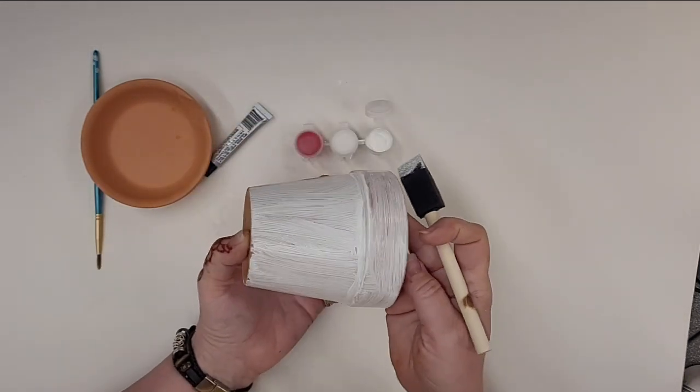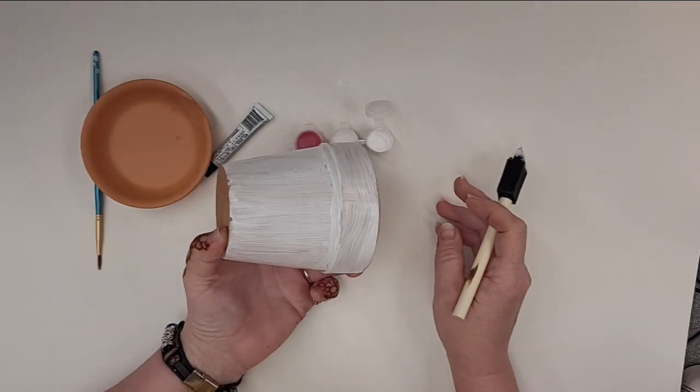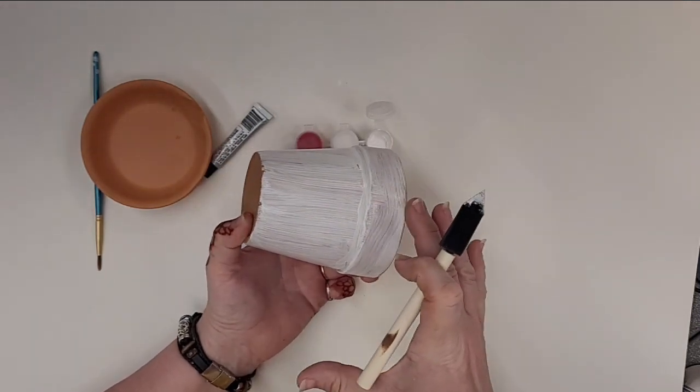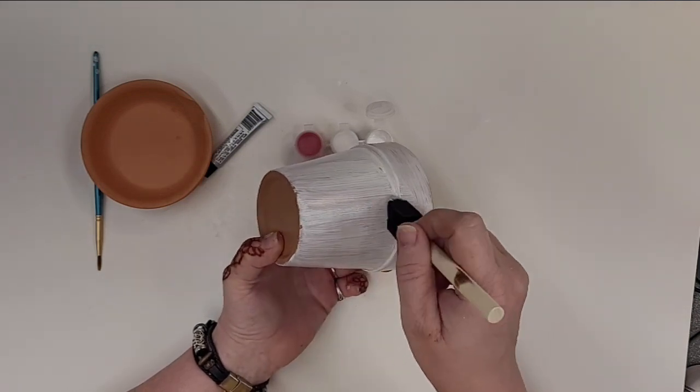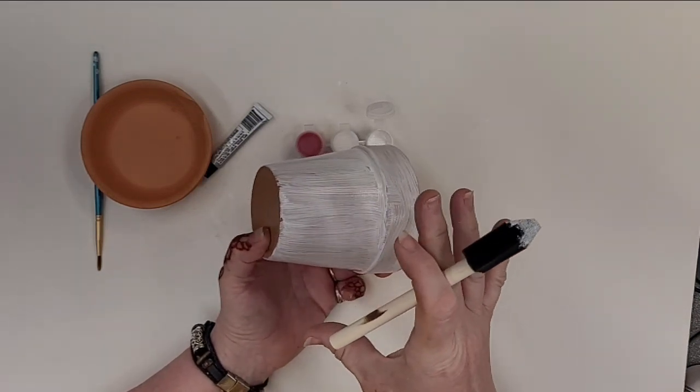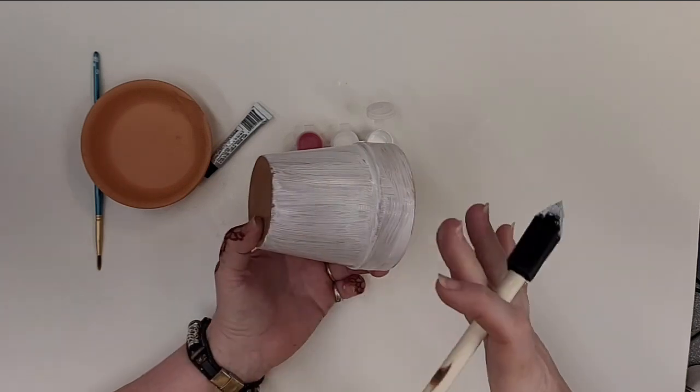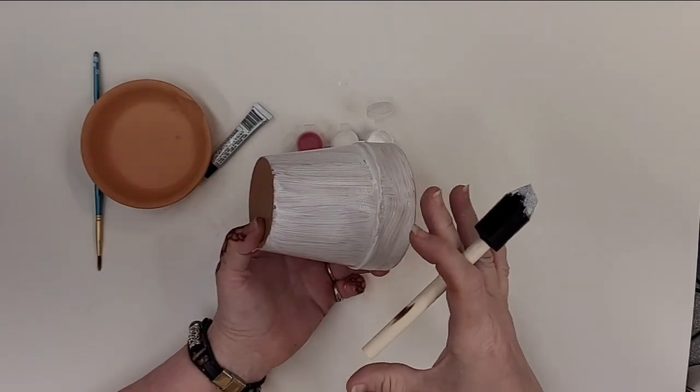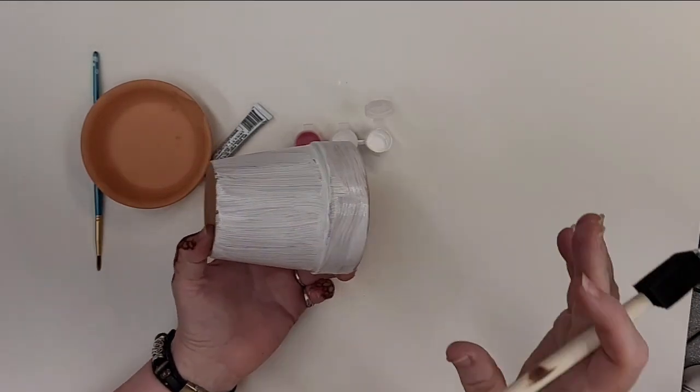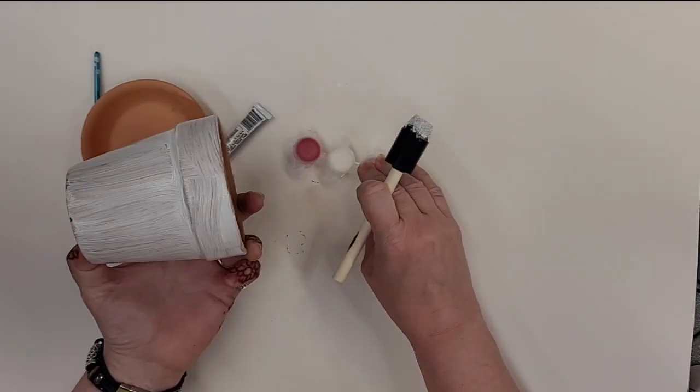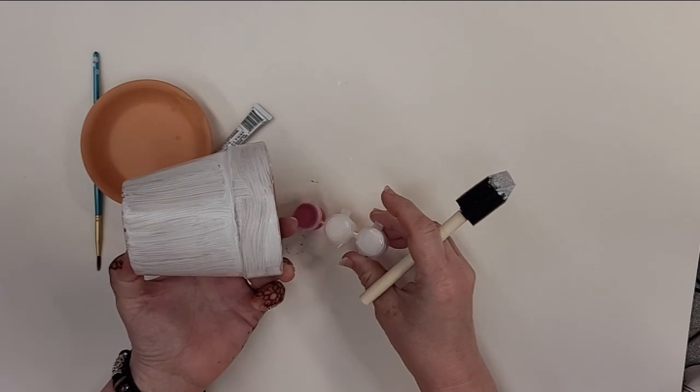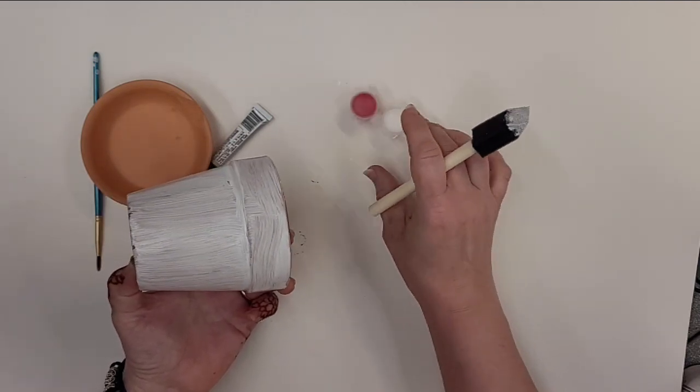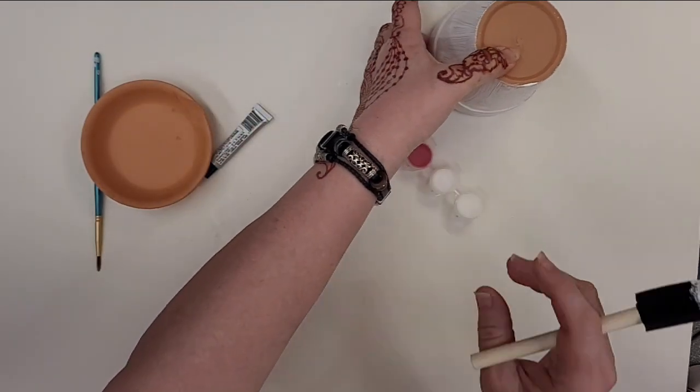Okay, now that's one coat. If you like the way this looks, if you think it looks kind of mushroomy, you're certainly welcome to leave it at that point. If you would like it to be a little more opaque white, then you can just let it dry and do another coat. Always close your paint in between so that you don't dry it out. I'm going to let that set aside to dry, rinse my brush, and then do a coat of red on this.